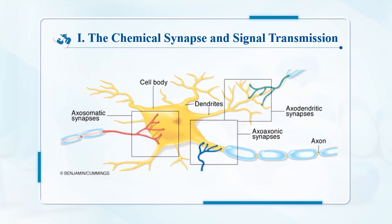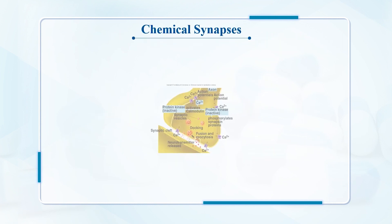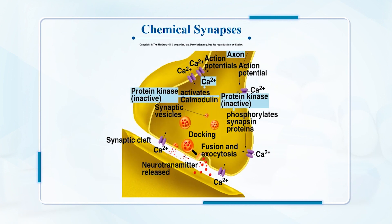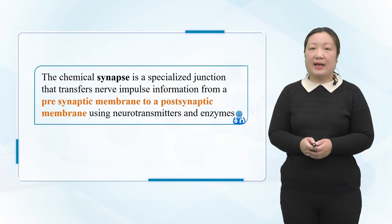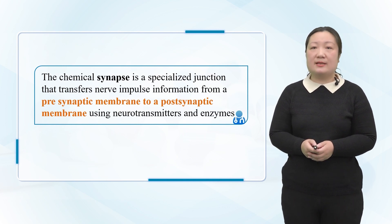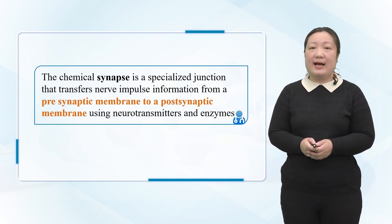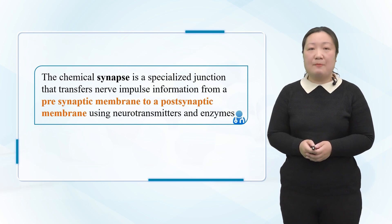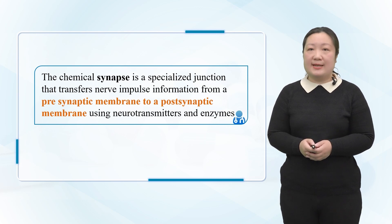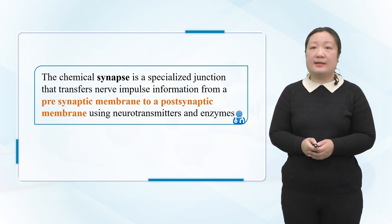The most important and basic way of contact is synaptic neurons. The structure of synapses is divided into pre-synaptic membranes, synaptic cleft, and post-synaptic membranes. The chemical synapse is a specialized junction that transfers nerve impulse information from the pre-synaptic membrane to the post-synaptic membrane, using neurotransmitters and enzymes.